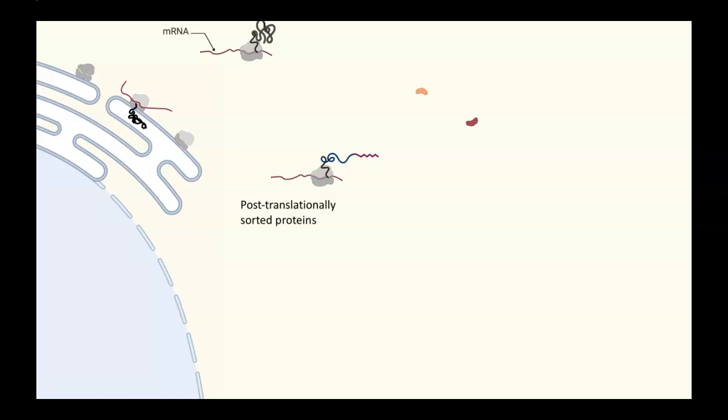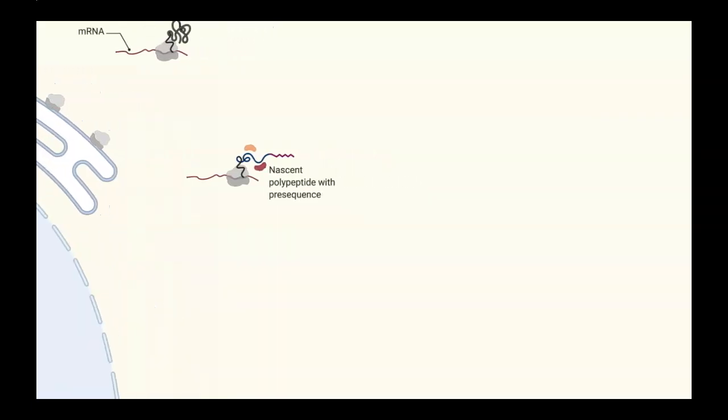There are proteins present in the cytoplasm called molecular chaperones. Two common ones are Hsp70 and Hsp90. Those proteins associate with the length of the polypeptide as it's being produced, and they prevent it from folding into a 3D configuration. We can see that here in this picture where the nascent polypeptide is associated with the proteins.